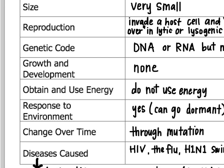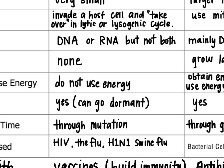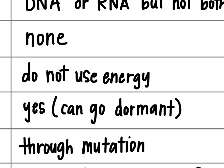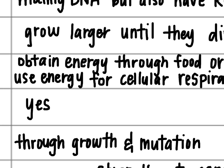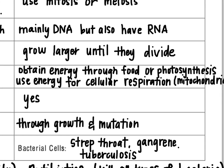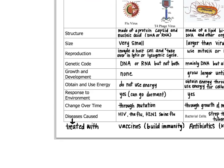How do they obtain and use energy? Viruses actually don't use energy — they don't have any of the machinery like mitochondria to be able to process energy through cellular respiration. However, cells will obtain energy either by consuming food or through a process like photosynthesis where they make their own food, and then they use that energy for cellular respiration, which happens inside of the mitochondria.